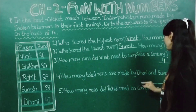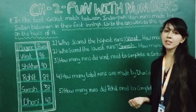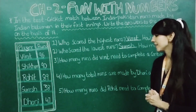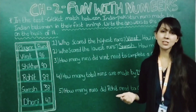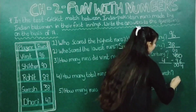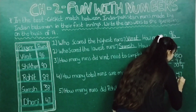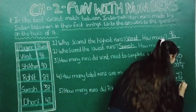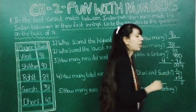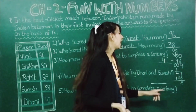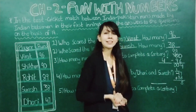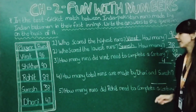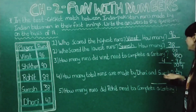Now let's see another question: how many total runs are made by Dhoni and Suresh? Now when it is asked about total, we find it with the help of addition. Dhoni has made 47 runs and Suresh has made 38 runs, so we will just add these runs. 47 plus 38 — now 7 plus 8 is 15, so here we will write 5 and carry 1 over to the tens place. 1 plus 4 is 5, and 5 plus 3 is 8. So here we will write 8, and the total is 85.